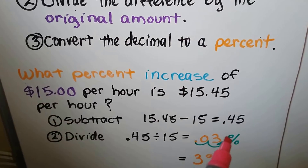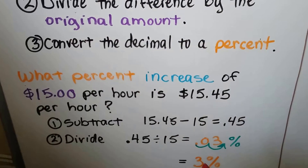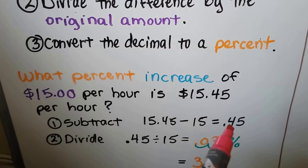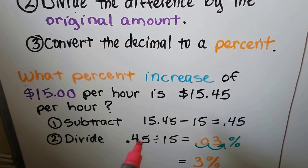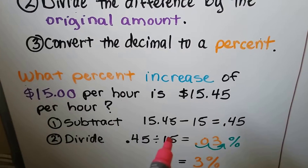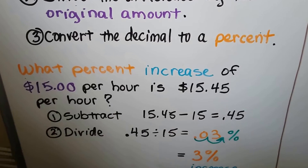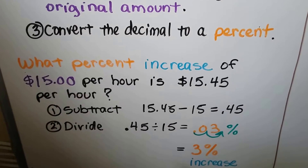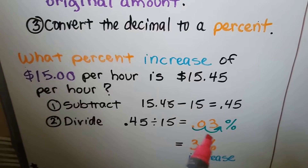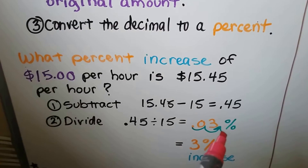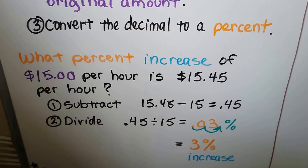The second thing we do is divide the difference by the original amount. So the 0.45 is the difference; we divide it by the original amount of $15 and we get 0.03. Now we change it to a percent — we move the decimal point and put in a percentage sign — and we have a 3% increase.